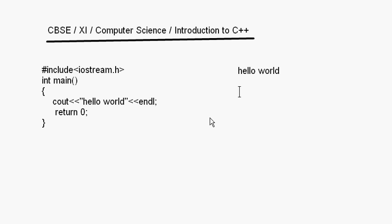The first line says hash include iostream.h. iostream stands for the input output stream. This is a header file — wherever you have this .h it represents a header file. iostream.h is a component of the standard library of C++ and it contains all the classes for input and output.